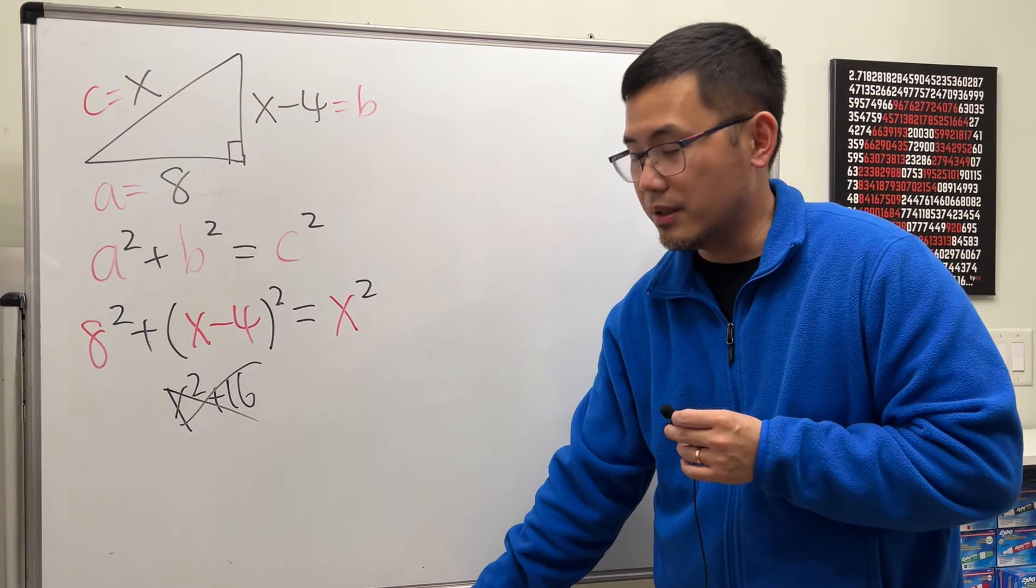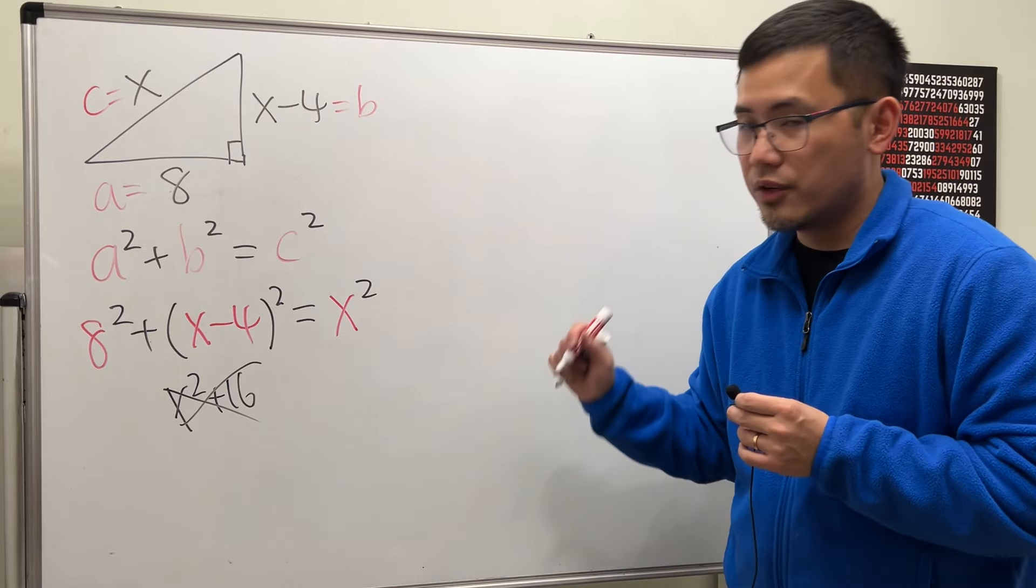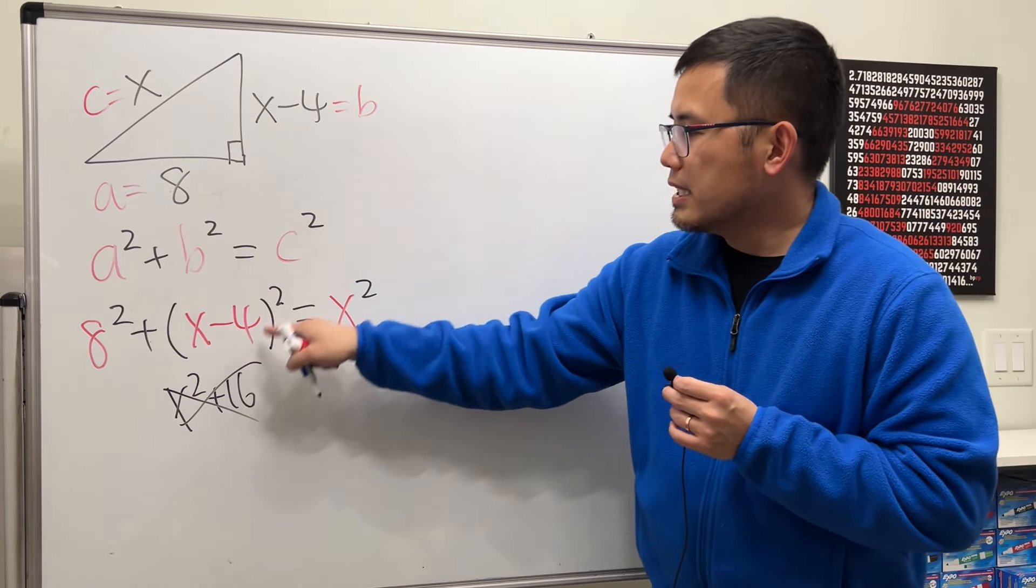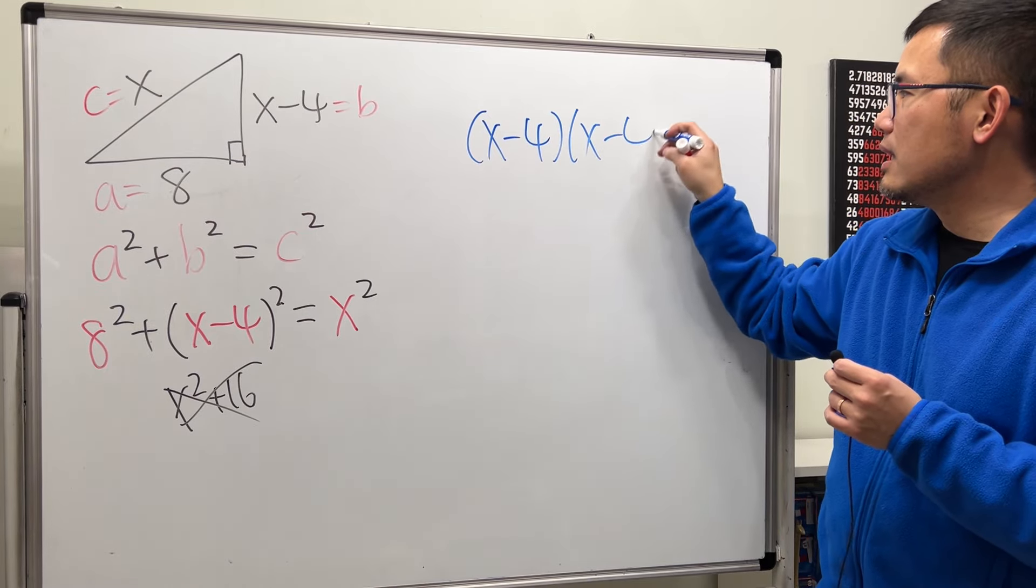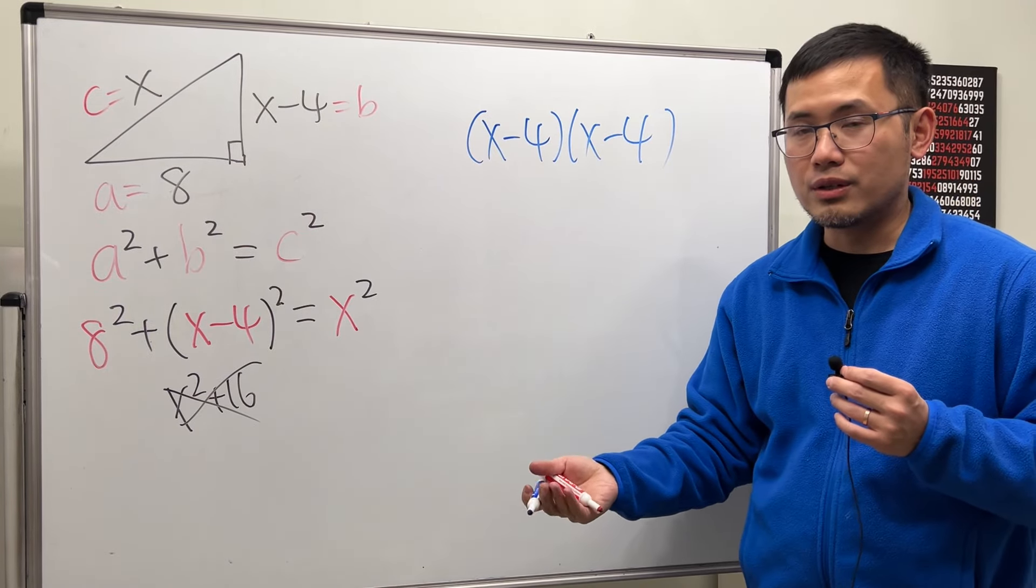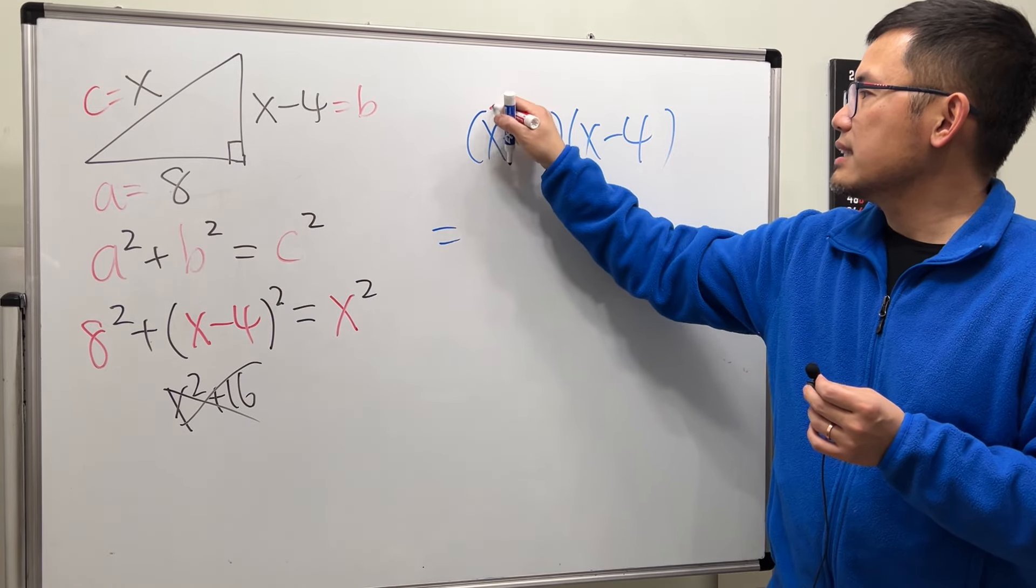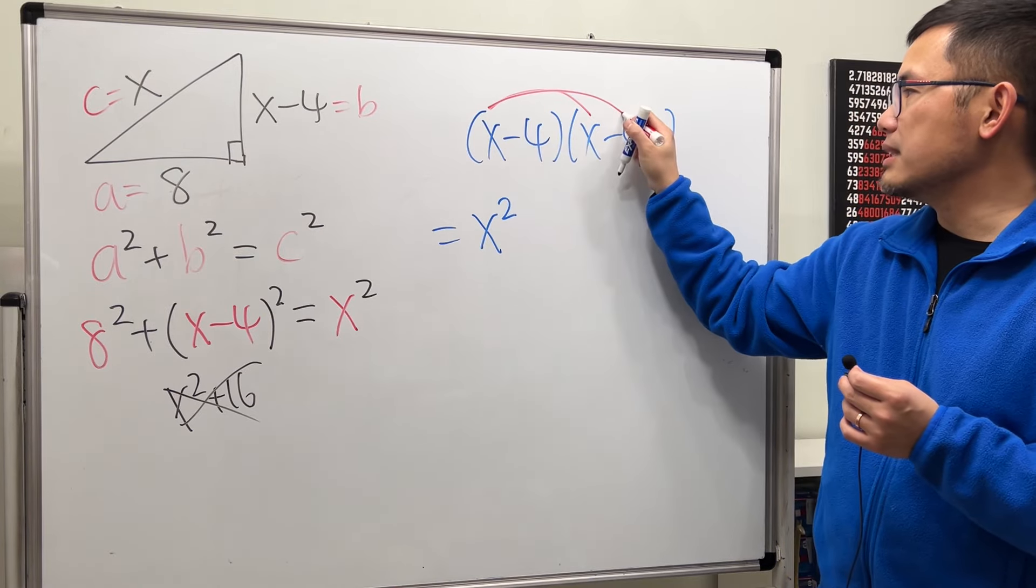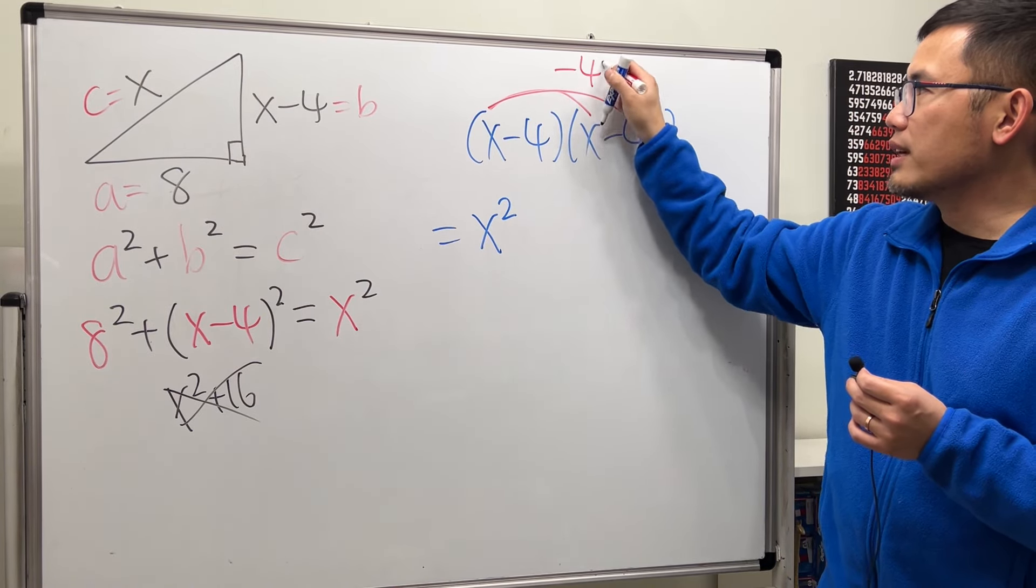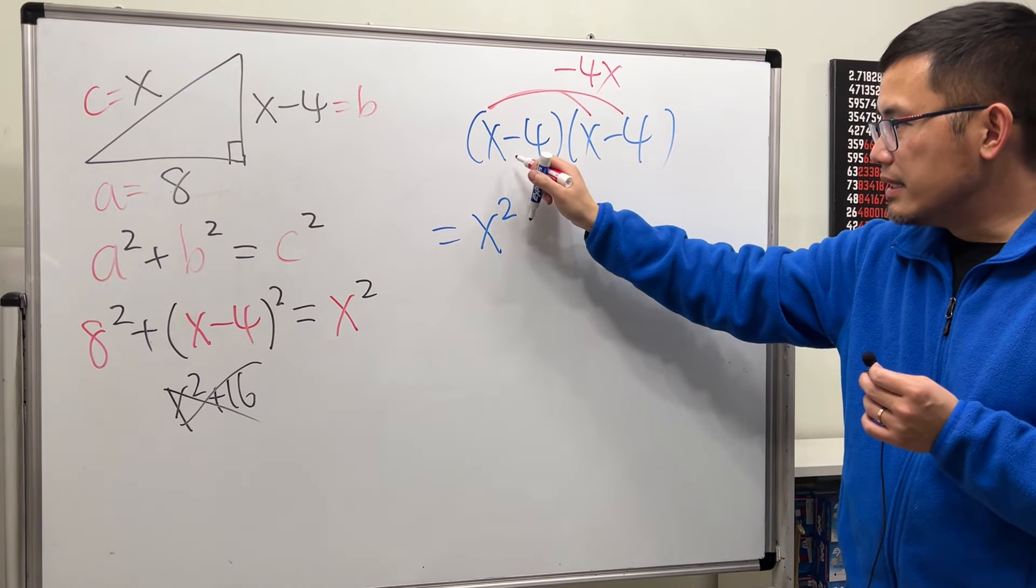Because when we have this situation, let me just make it super clear for you. x minus 4 squared, you write it down twice on the side, like this. And then you are going to multiply it out four ways. So we get x times x, which is x-squared. And then x times negative 4. That's negative 4x. And we are done with that.